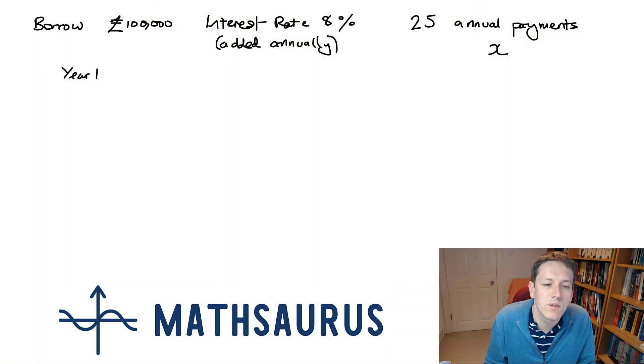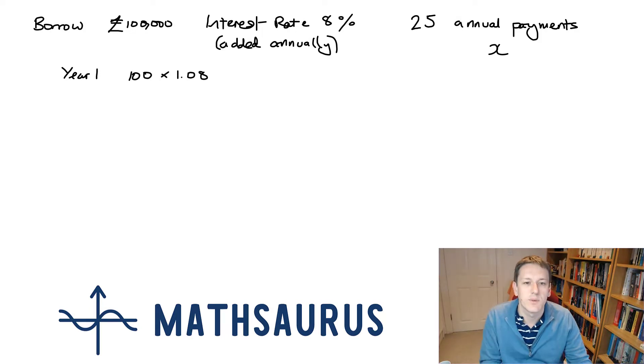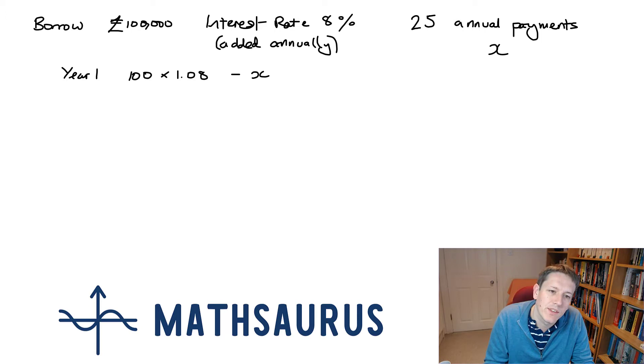So at the end of year 1, we're going to owe 100,000 times 1.08 and I'll just write 100 instead of 100,000 so I don't have to keep writing these zeros. And we're going to pay off an amount of x. So that's how much we owe at the end of year 1.